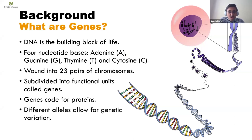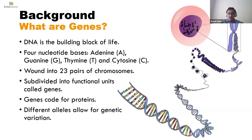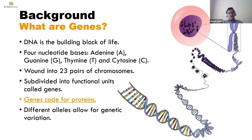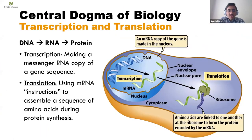Human DNA is wound into chromosomes. We have 23 pairs of chromosomes, and each chromosome is further divided into functional units called genes. The Human Genome Project estimates we have about 20,000 to 25,000 protein-coding genes. Each gene provides instructions for a functional product — a molecule needed to perform a job in the cell. In many cases the functional product of a gene is a protein, but sometimes a gene may produce a functional RNA molecule, called a non-coding gene. Different copies of the same gene are called alleles, and they account for human variation.